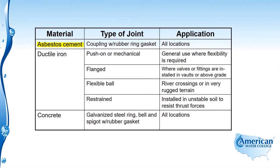The next type of material, much more common today, is ductile iron. Ductile iron can be connected with push-on joints or mechanical joints. For long runs, the push-on joint is the most common and its application is general use where flexibility is required. Next is the flanged joint, which is used where valves or fittings are installed in vaults or above grade. You generally won't see a flanged joint buried — it needs to be in an exposed location. The flexible ball joint is used at river crossings or over very rugged terrain.